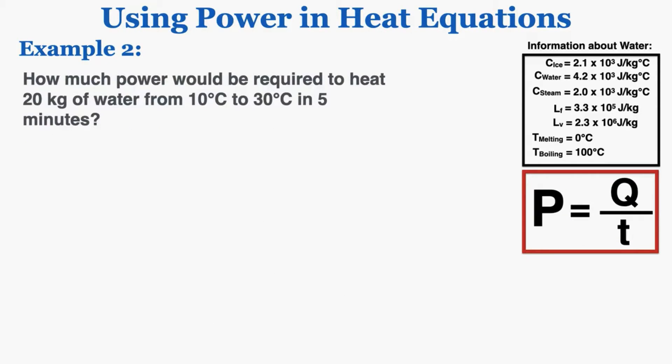Example number two is asking how much power would be required to heat 20 kilograms of water from 10 degrees Celsius to 30 degrees Celsius in five minutes. So this is a change in temperature, so we're going to use Q equals MC delta T.